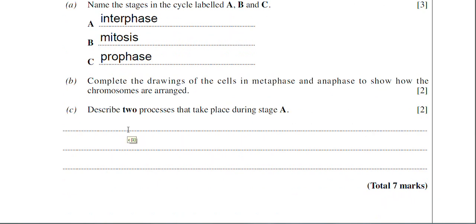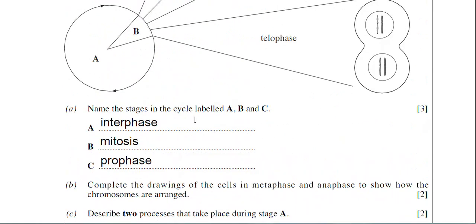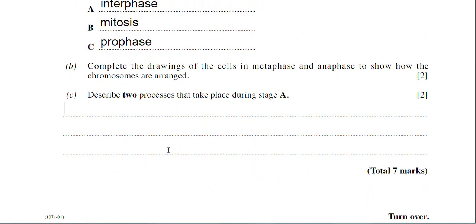Moving on to part C. You're asked to describe two processes that take place during stage A. So if you just scroll up again, stage A of course is interphase. It's the longest phase of the cell cycle. And basically there's quite a lot of processes that occur. But classic examples to put in are protein synthesis or replication of DNA, the cell growing or the cell is enlarging in size. You can get the production of new organelles. So just two examples of processes taking part in stage A. The two processes I've decided on are protein synthesis and DNA replication.